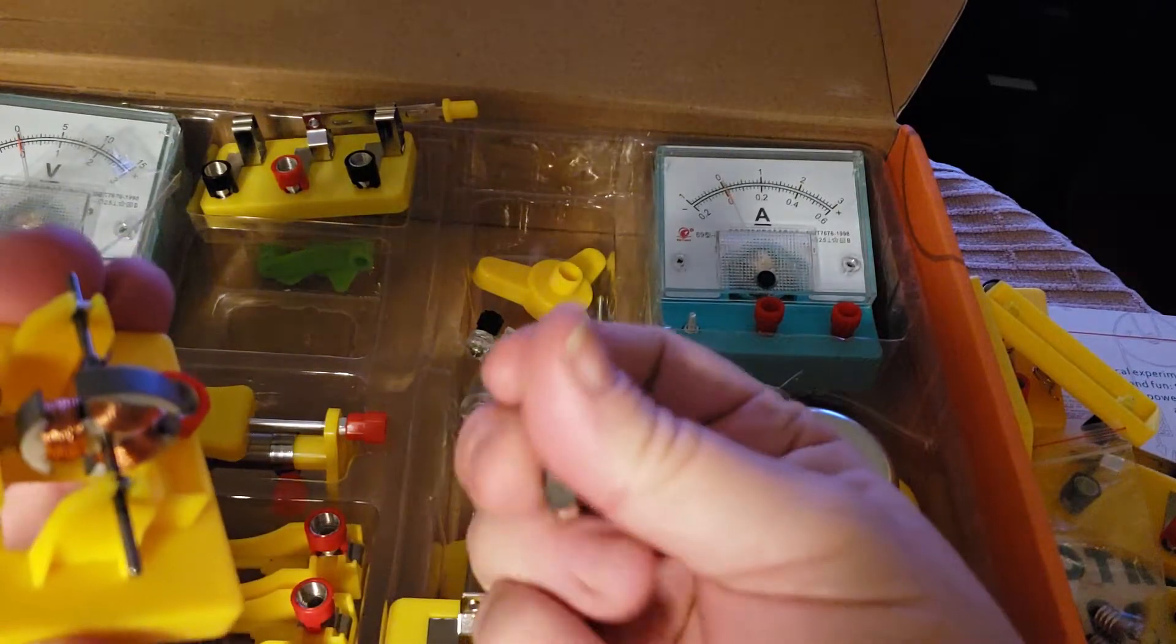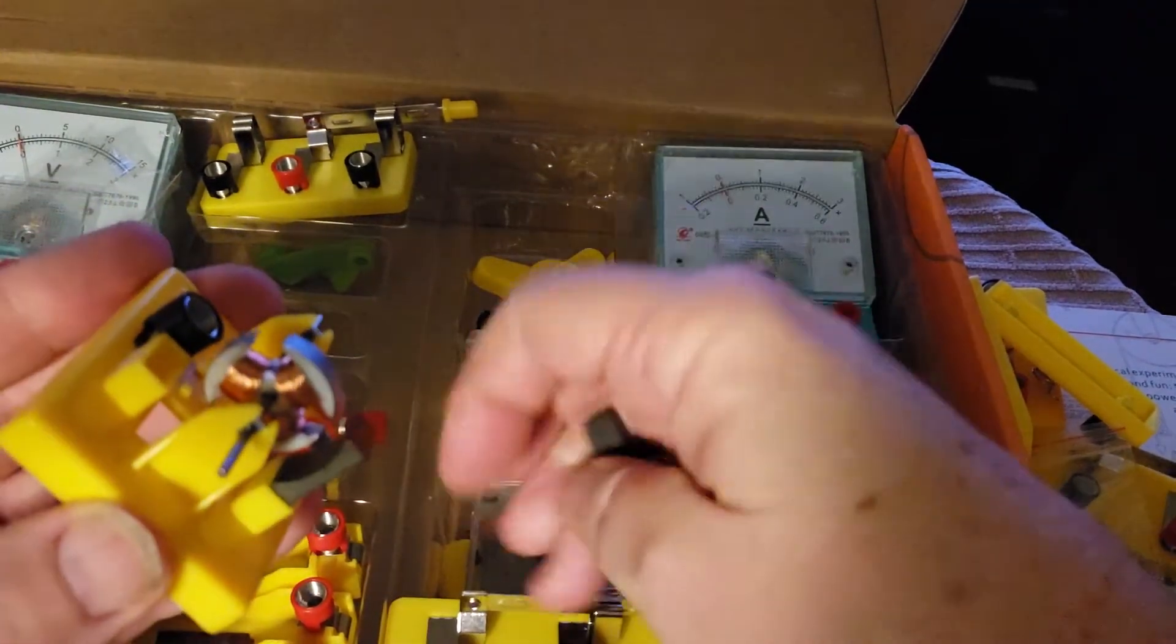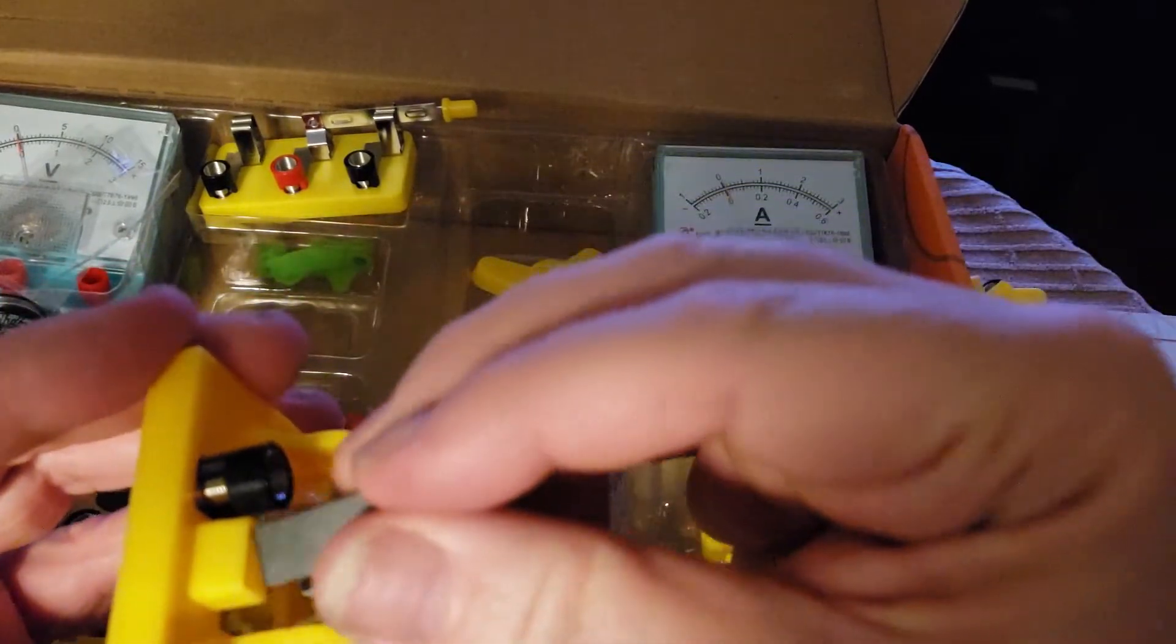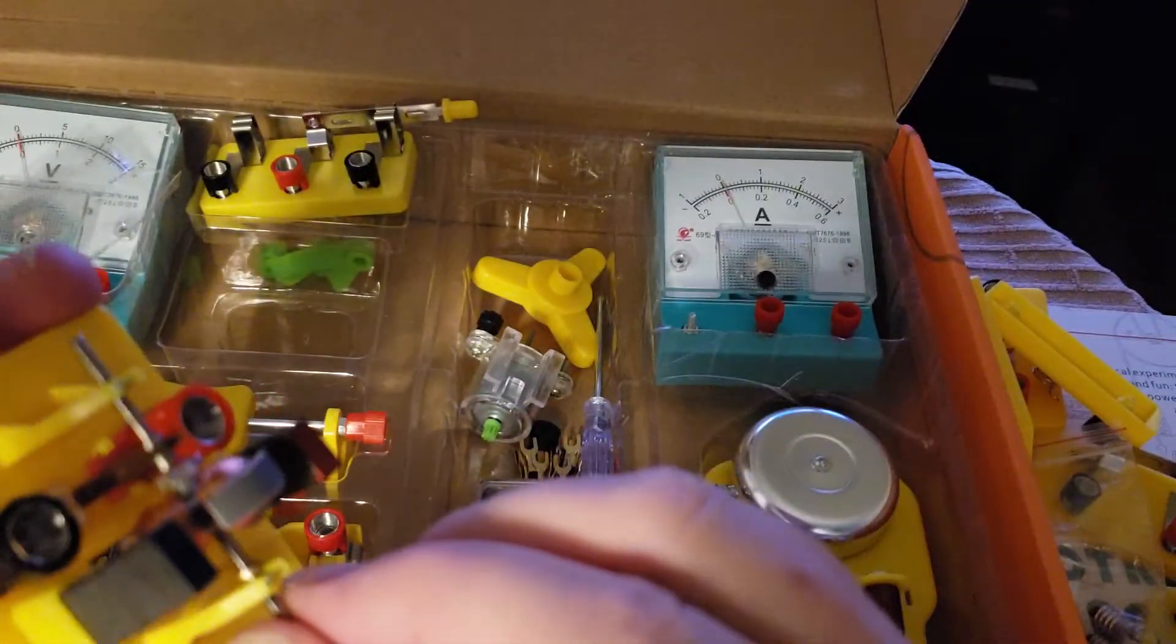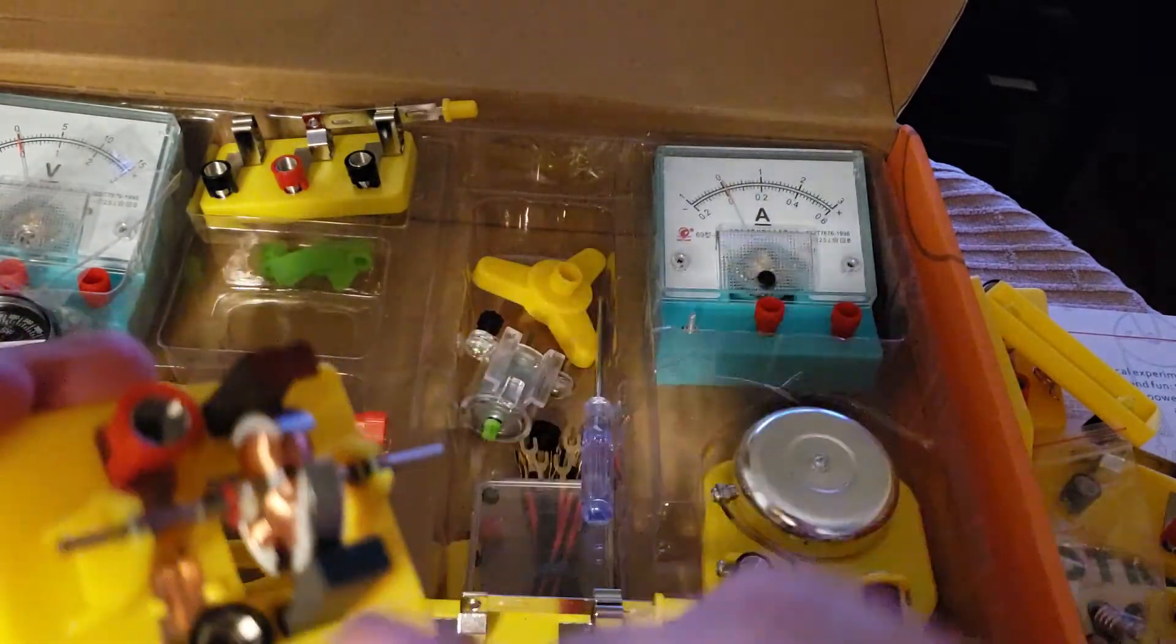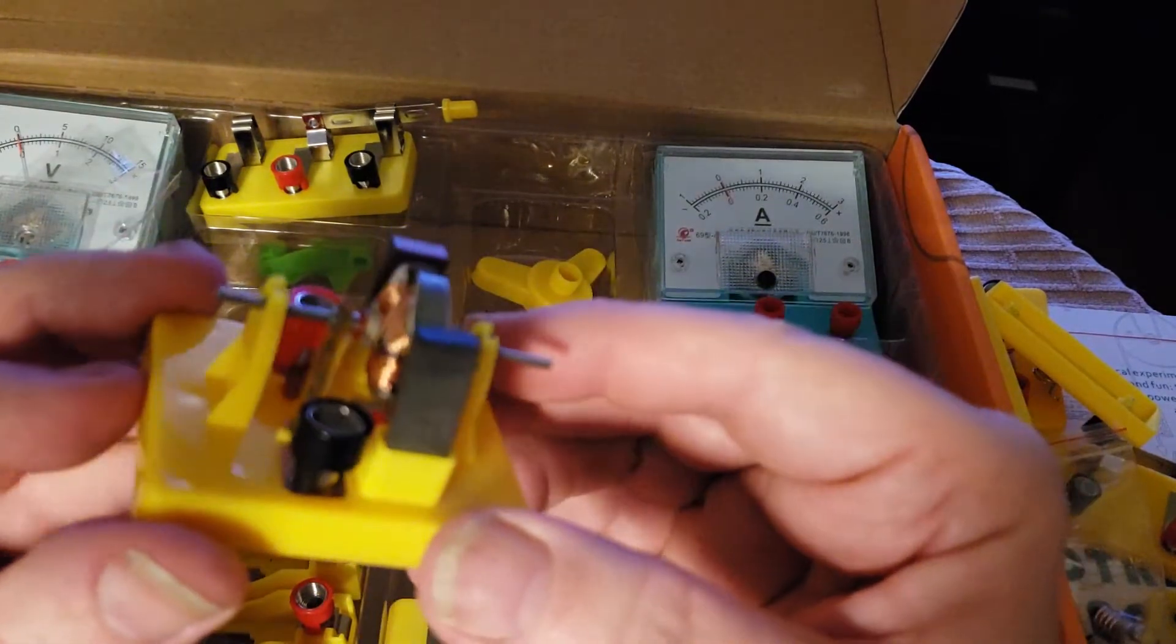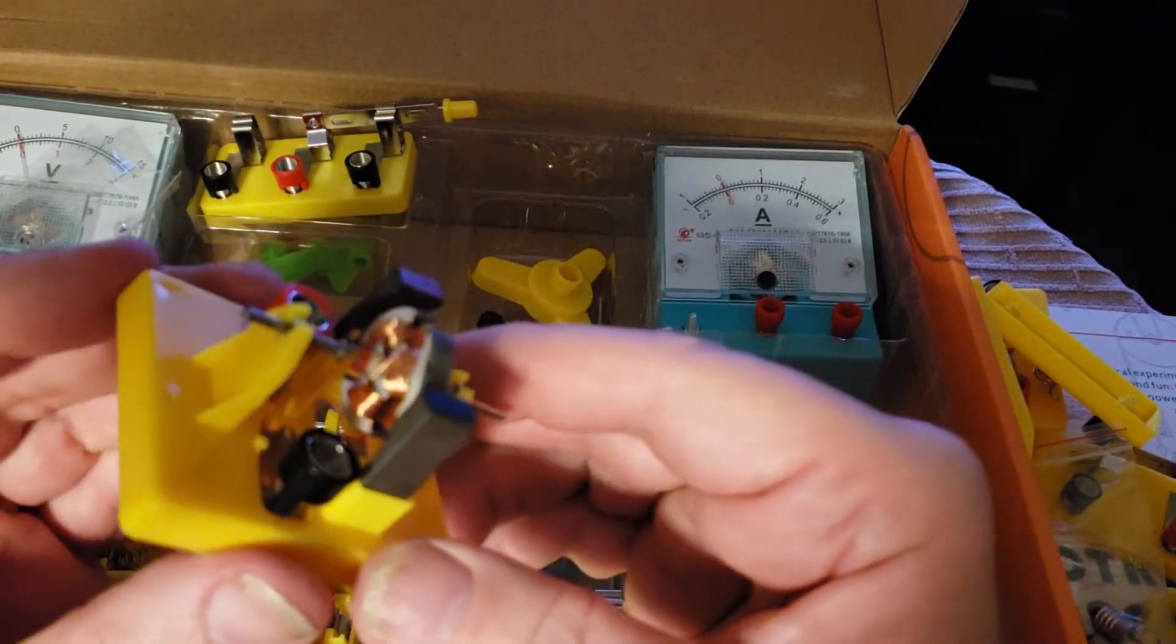But you can take the magnets out and show that it doesn't work without magnets. It has the armature, and then there's the brushes, or just little foil like leaf springs.